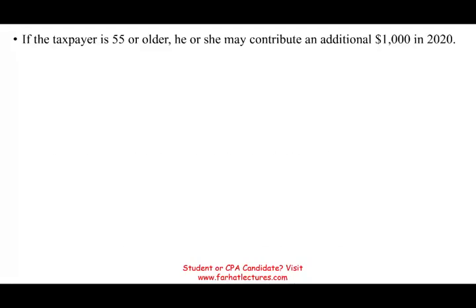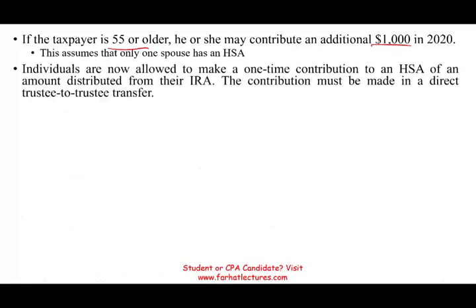If the taxpayer is above 55, they can contribute an additional $1,000 — the idea being you may have more medical expenses as you get older and can therefore contribute a little bit more. This assumes only one spouse has an HSA; if more than one spouse has an HSA, it gets more complicated and is beyond the scope of this course.